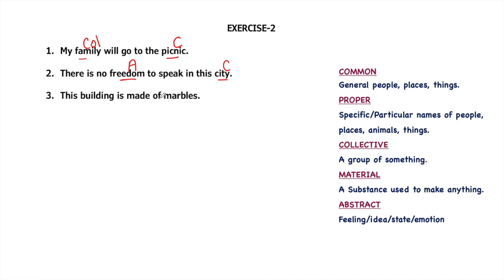This building is made of marbles. Building is a common noun. Marbles is a substance or material, so material noun. Childhood is the time of joy and freedom. It's a unique sentence in which the four words—childhood, time, joy, and freedom—all are abstract nouns. Because childhood is a state of being child. Time is a state which cannot be experienced through five senses. We can measure time with watch or clock, but time cannot be experienced. Joy is a state, and freedom is also a state when someone is free. So all these four words are abstract nouns.